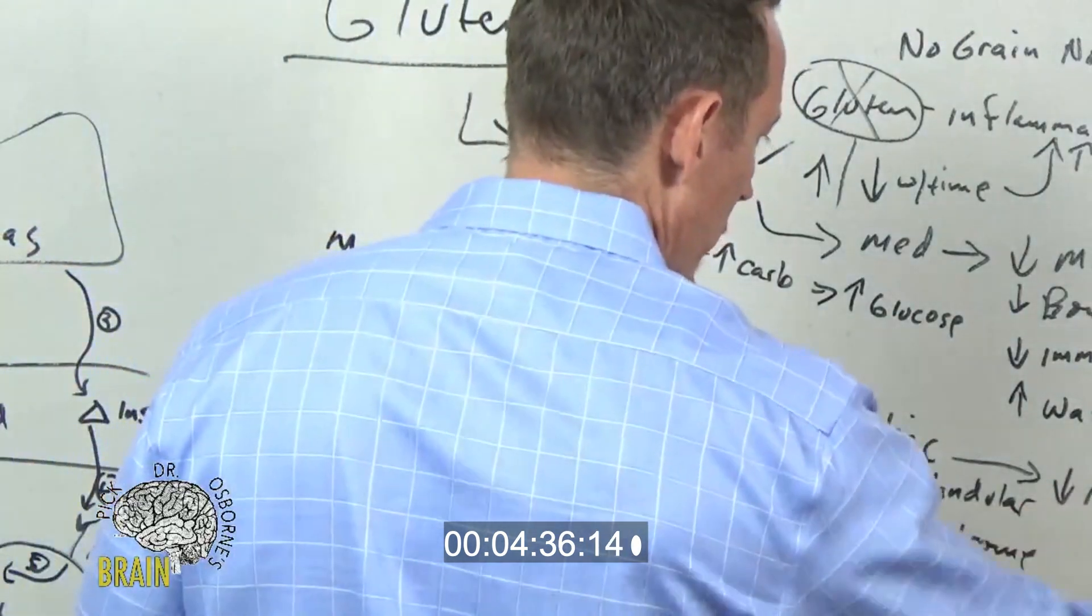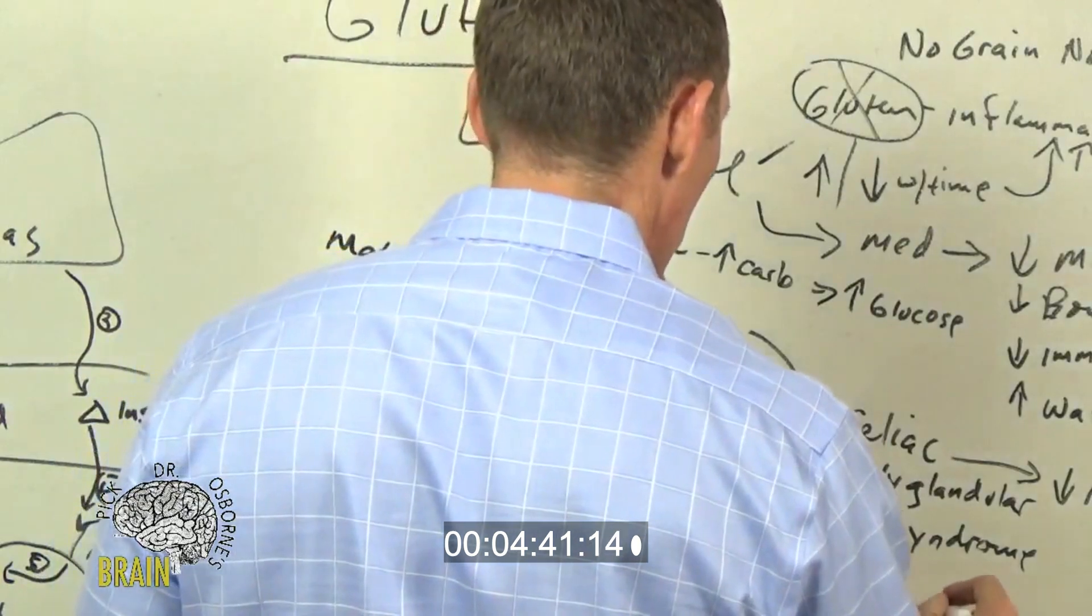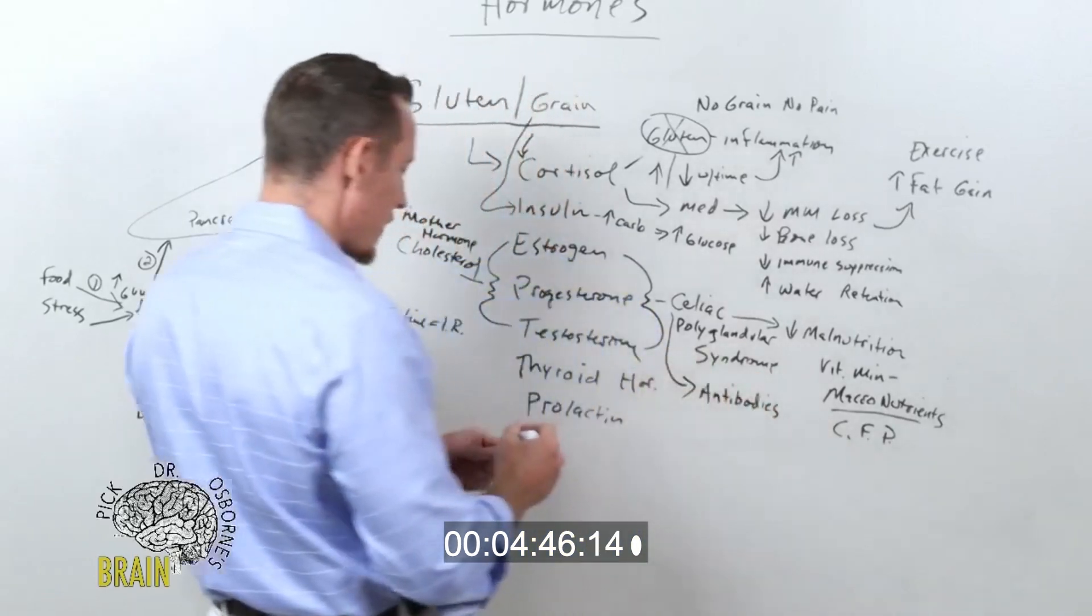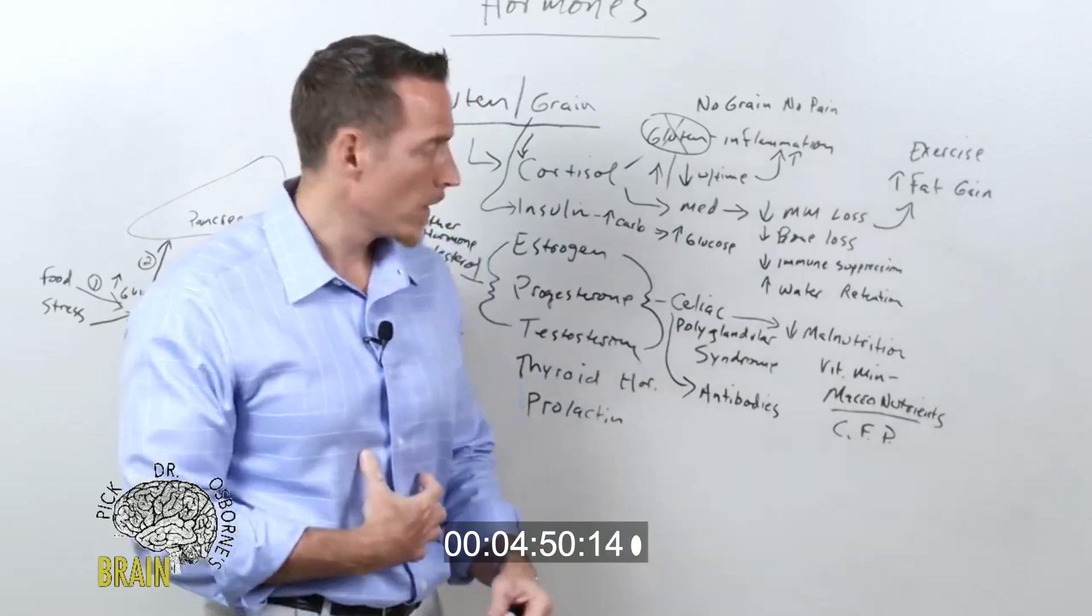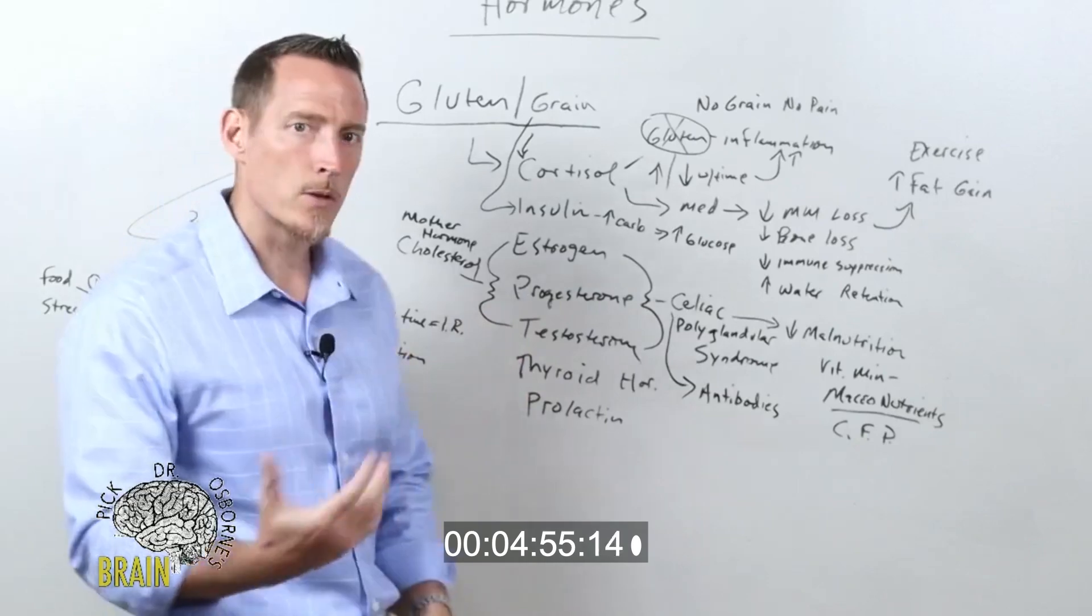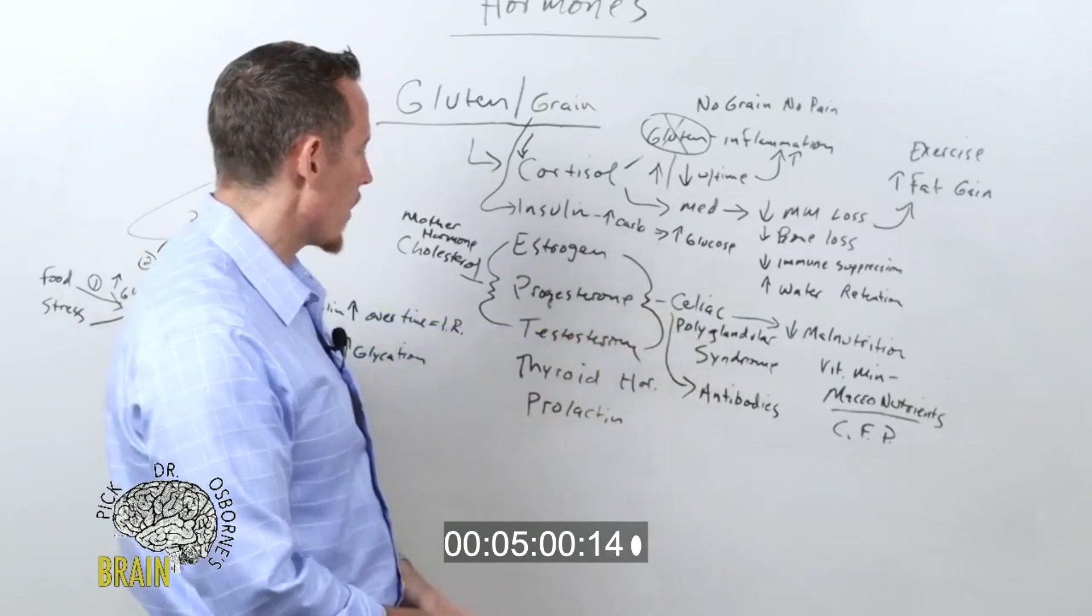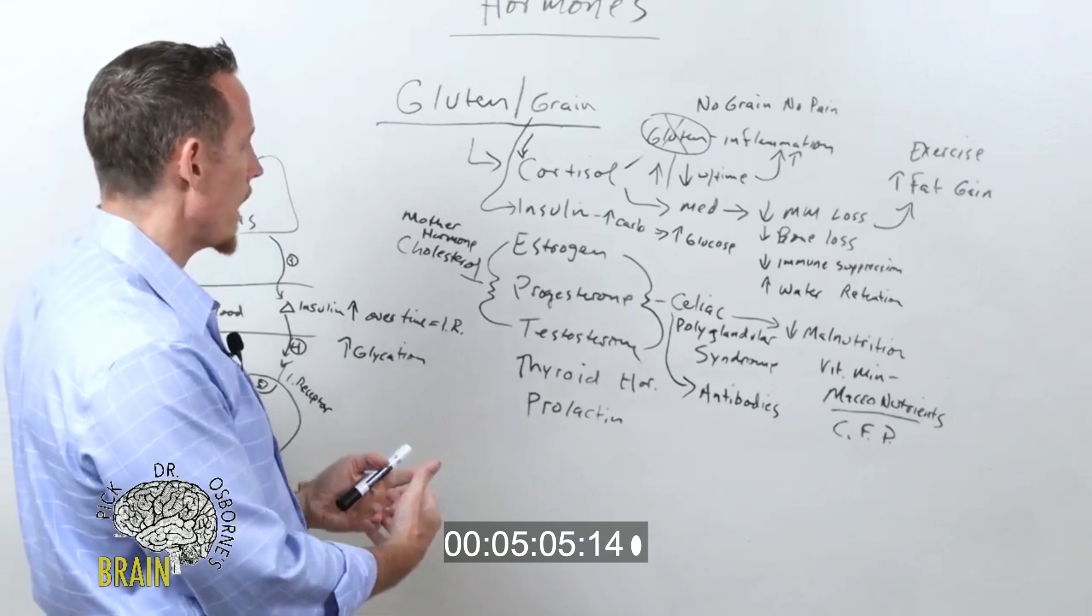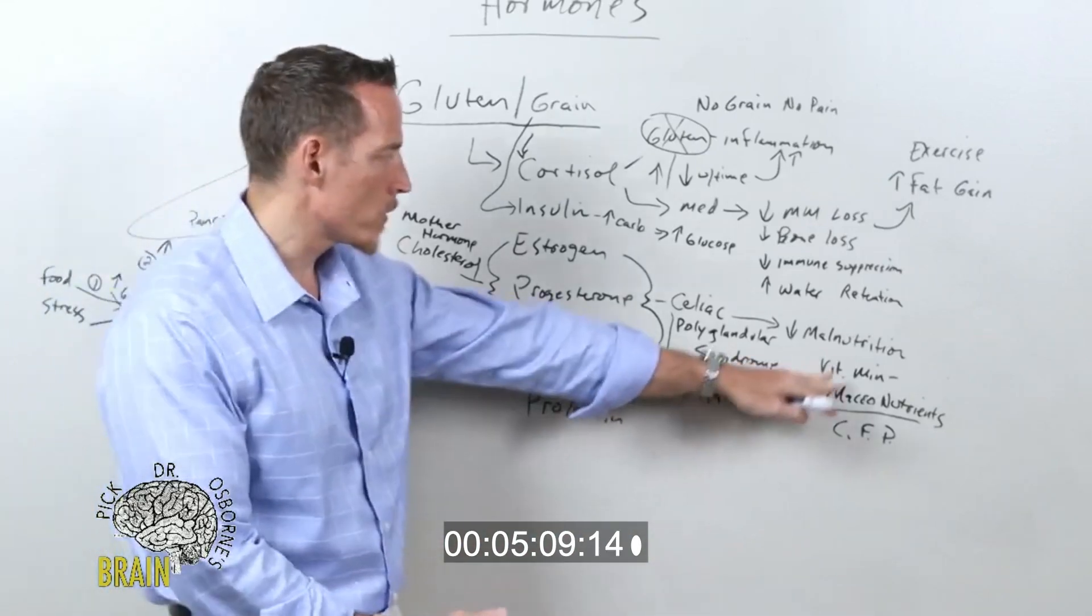But there's also research, so this is one element here, the malnutrition element. There's also research that shows antibodies, just like celiac disease has antibodies that attack the gut and damage the gut, we're now finding antibodies that can attack and damage hormones and hormone receptors as a result of the wrong food, as a result of eating the wrong food items.